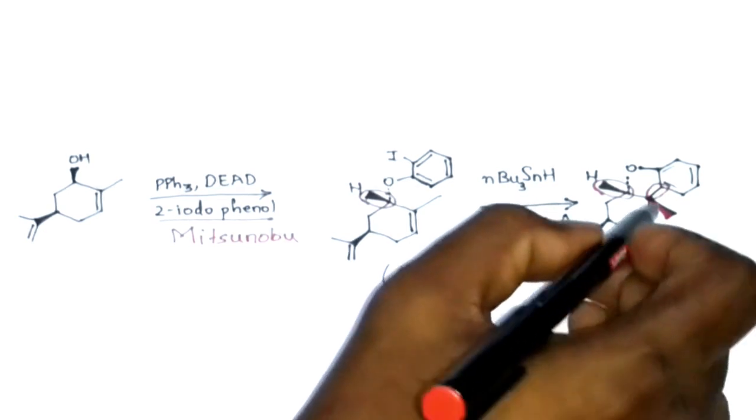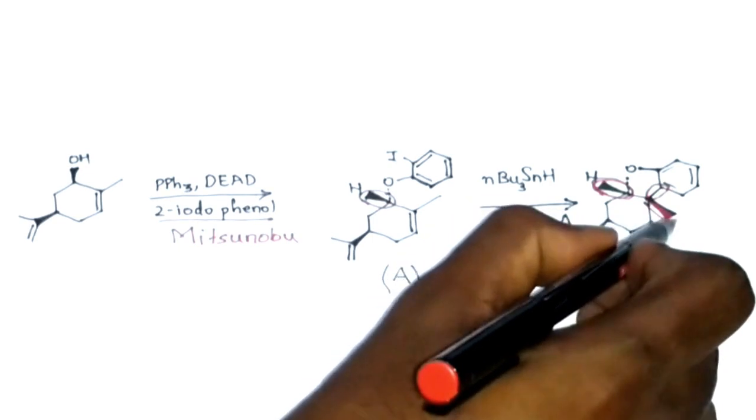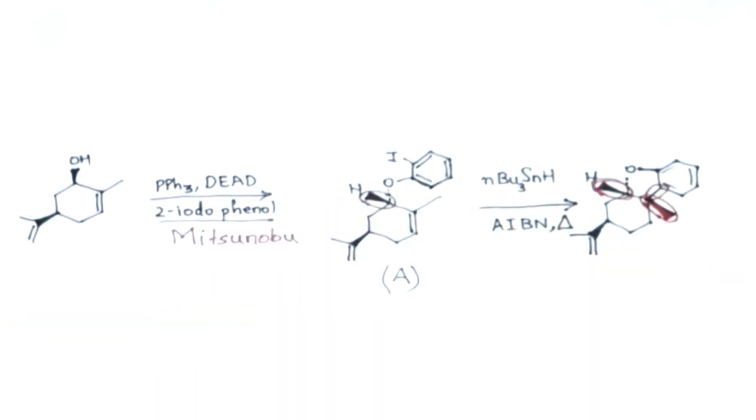So in short, these two groups—the H group here and the methyl group here—will be above the plane of the paper.